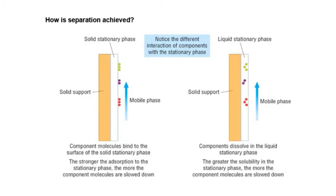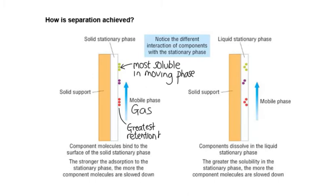If it's a solid support, the moving phase, our gas, in this case it's our gas, is flowing through our column, and it's pushing the samples with it. So up here we've got the most soluble in the moving phase. And down at the bottom we've got the greatest retention to the stationary phase. Now because this is a solid, the retention is going to be by adsorption, not sticking to the side of the solid.